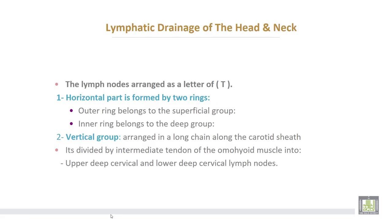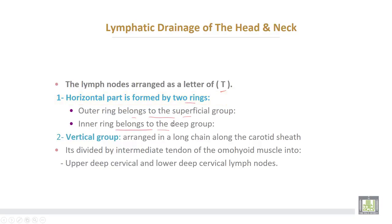Lymphatic drainage of the head and neck. The lymph nodes are arranged in the shape of the letter T. The horizontal part is formed by two rings: the outer ring belongs to the superficial group, while the inner ring belongs to the deep group. The vertical group is arranged in a long chain along the carotid sheath, divided by the intermediate tendon of the omohyoid muscle into upper deep cervical lymph nodes and lower deep cervical lymph nodes.